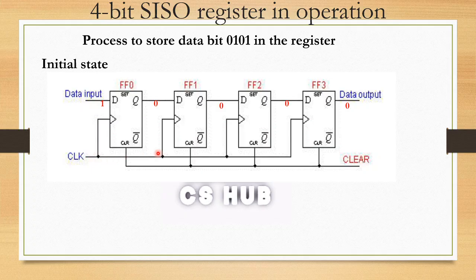For the first input, we connect all flip-flops to the clock. We also connect a clear input to all flip-flops. The first data input comes to the first flip-flop D. Then the Q output goes to the next flip-flop D input, connecting FF0, FF1, FF2, and FF3 in series. All flip-flops share a common clock and clear input line.